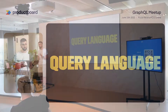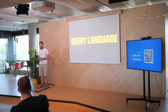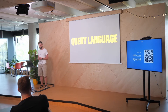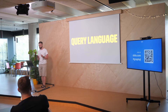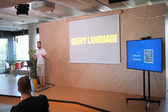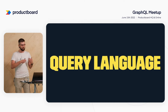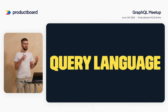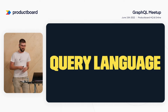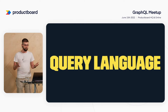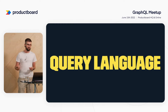GraphQL is actually a query language for your API and a server-side runtime for executing queries using a type system you define for your data. Although it might sound like GraphQL is connected to specific systems or graph databases, it's not really true — it's not specifically tied to any type of database or storage engine. Instead, it's backed by your existing code and data.